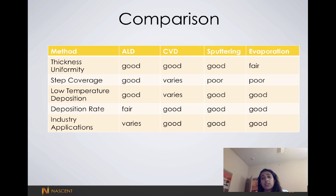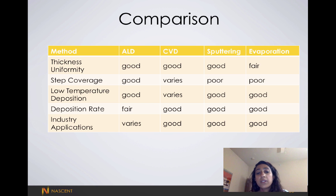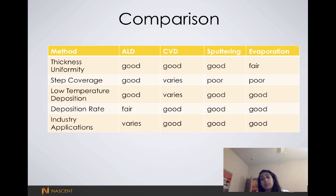There are some CVD processes that cannot operate at low temperature. However, CVD does have a faster deposition rate. Sputtering and evaporation really suffer as deposition processes when it comes to step coverage — you get non-uniform deposition across patterns.